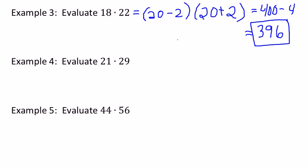So example 4, 21 and 29 are both 4 units away from 25. So that means we can write 21 times 29 as 25 squared, 625, minus 4 squared, which is 16. 625 minus 16 is just 609.